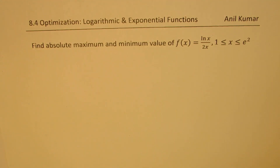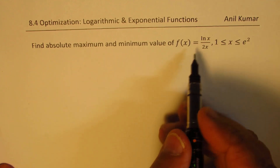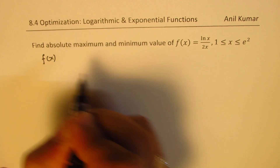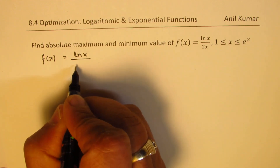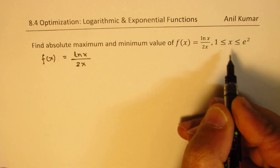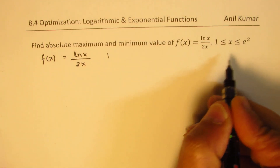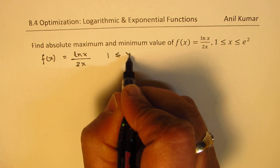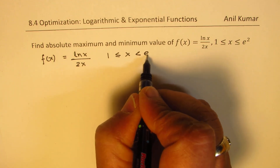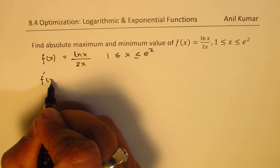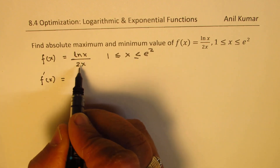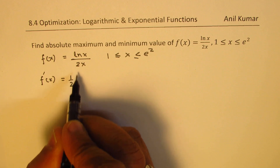Let's take up the next example, which is very similar. You can pause the video, answer this question, and then look at my suggestions — I have intentionally taken a very similar example for you to practice. The function is essentially the same and the interval is slightly different: x is between 1 and e². As we did earlier, the derivative — keeping the 1/2 outside and applying the quotient rule — gives us half of (1 − ln(x)) / x².